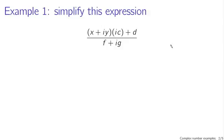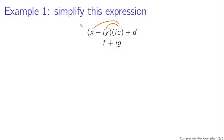First example: simplify this expression. You have two complex numbers multiplied in the numerator and then a division. The first thing to simplify is this multiplication — we have x plus iy times ic. This is pretty easy; it's a simple sort of distribution.